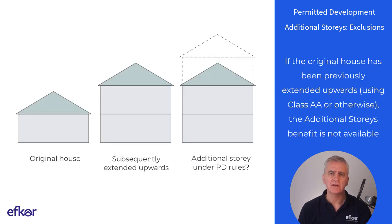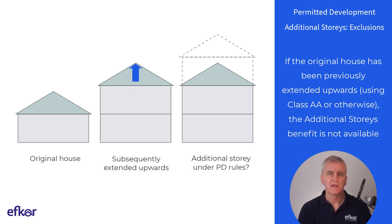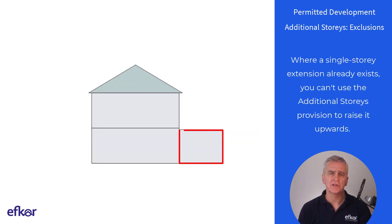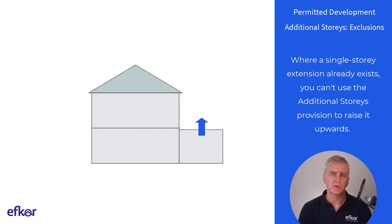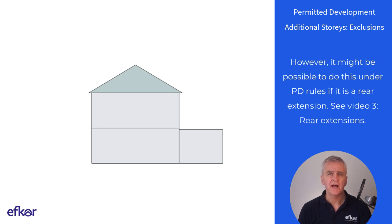If the original house has been previously extended upwards using class A or otherwise, the additional stories benefit is not available. Where a single story extension already exists, you can't use the additional stories provision to raise it upwards. However, it might be possible to do this under PD rules if it is a rear extension. Check out video 3 on rear extensions.